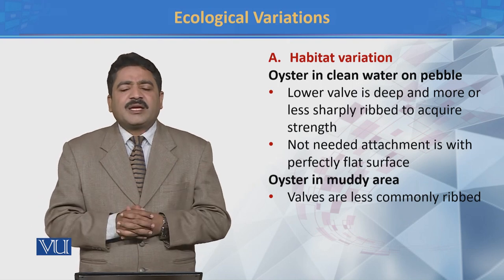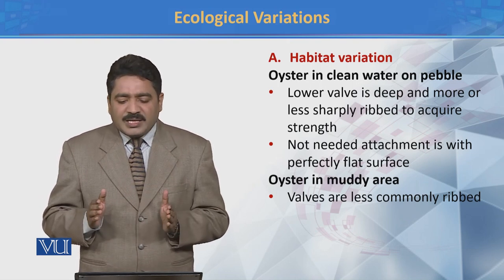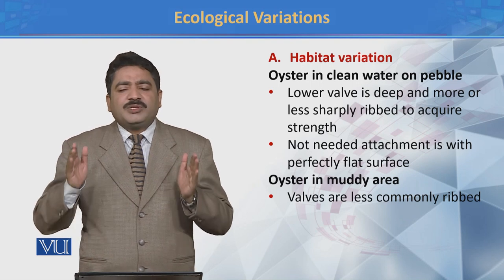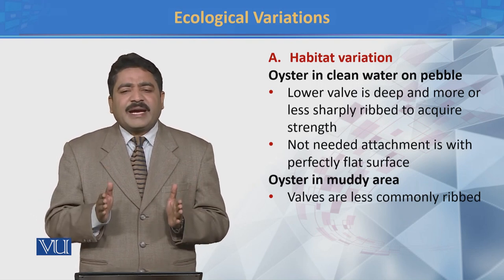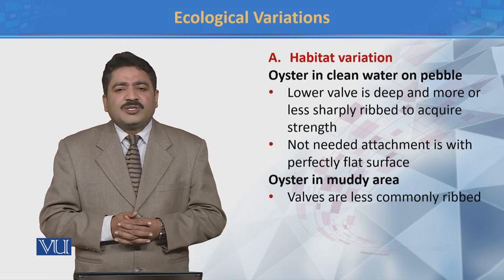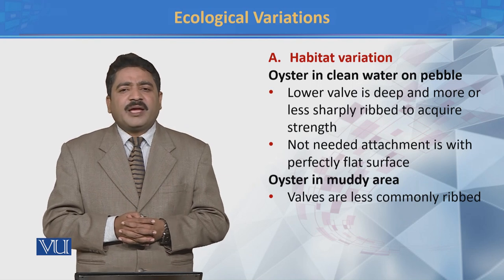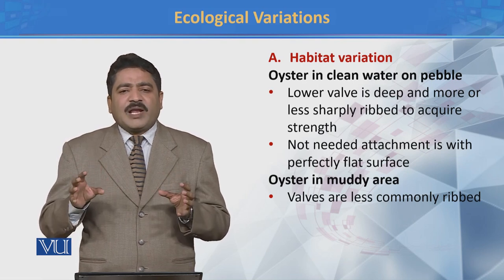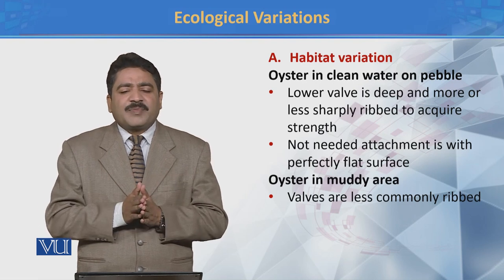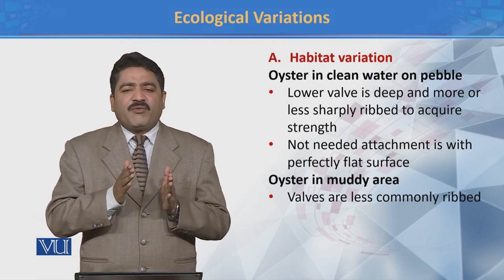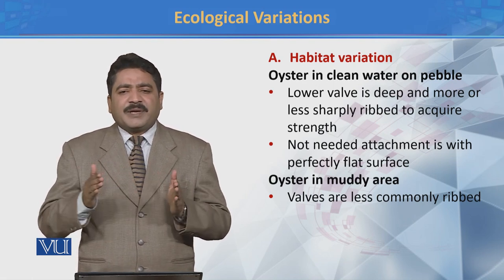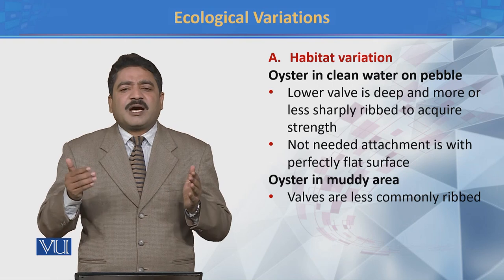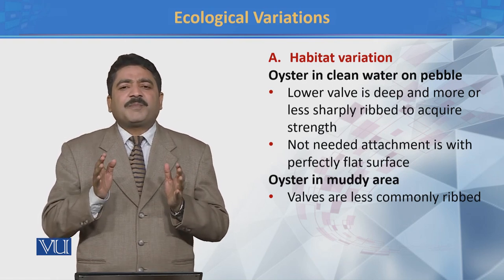Isi tarike se agar muddy area ke andar ek oyster maujood hai to wahan par iska jo lower valve hai yeh commonly less ribbed hota hai. To yeh jo variation hai different habitat ke andar — yeh isliye hai kyunke different habitats ke andar jo surface available hai wo different hai. To wahan par adjust karne ke liye, apni strength banane ke liye, iska jo lower valve hai uska jo structure hai wo change ho raha hota hai. To yeh basically ek ecological variation hai.